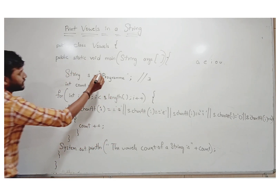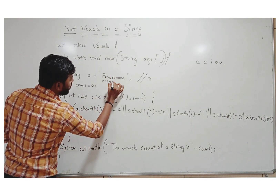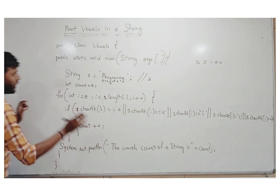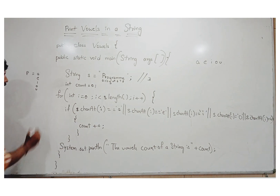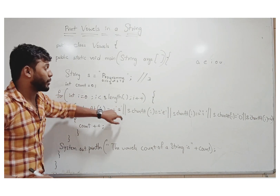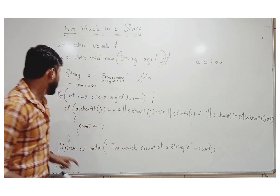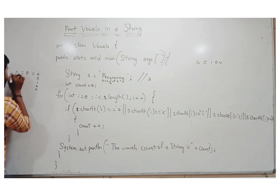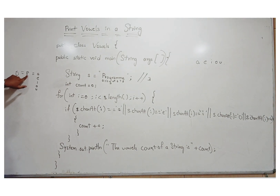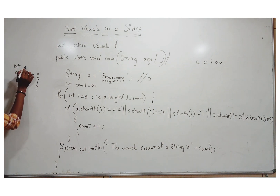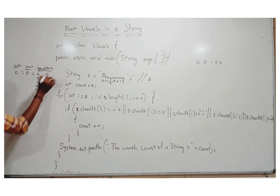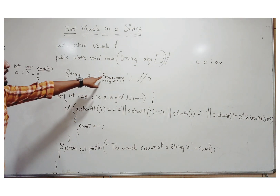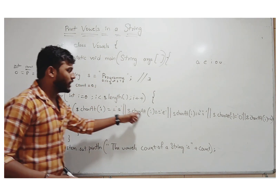The index values of 'program' are zero through eight. We check: character at index equals equals 'a' or 'e' or 'i' or 'o' or 'u'. This uses the logical OR operator. At index zero, the character is 'p'. We check the condition for each index value against the vowels.